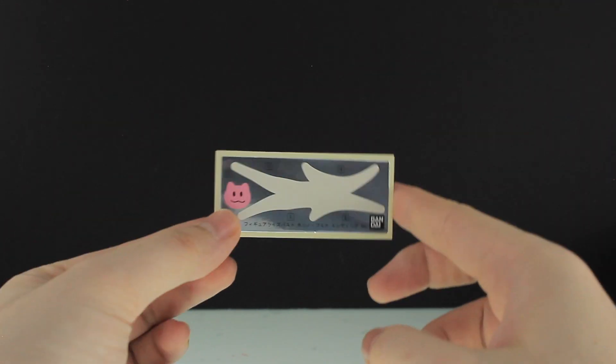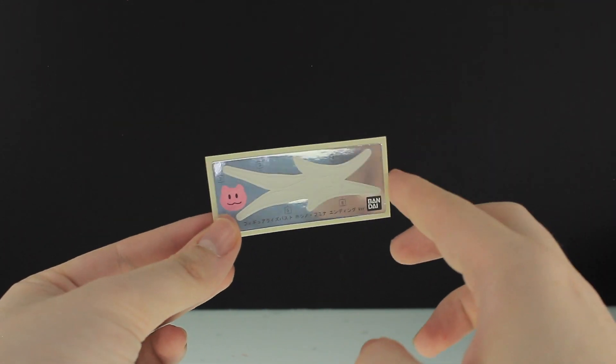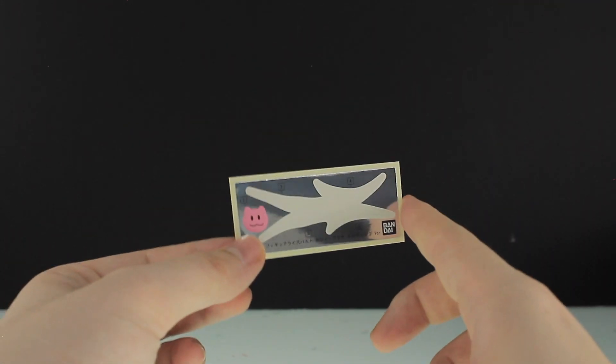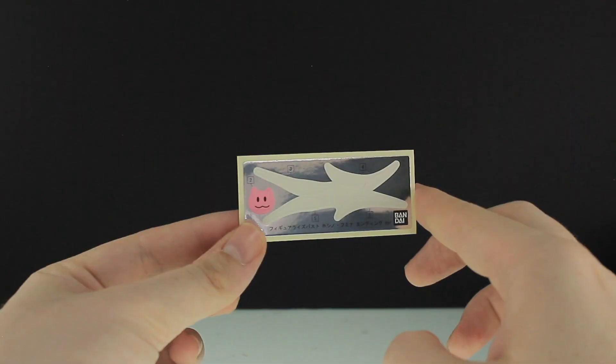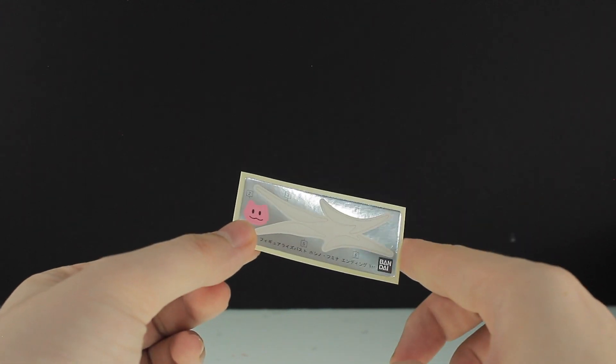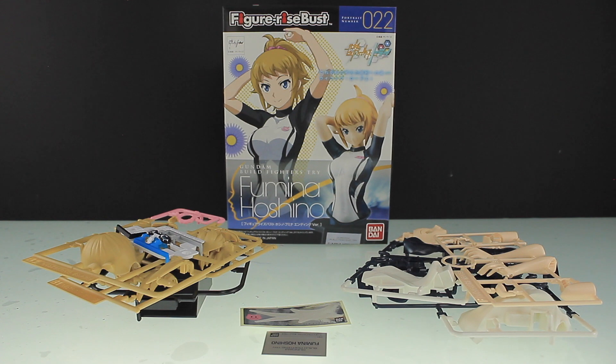Last up in here then is the stickers, and we've got four fairly large white stickers in here. Again, I guess that's not the worst, but we've also got this cute little cat. I think it's a cat, is it meant to be a Haro, a Haro cat? I don't know, whatever.